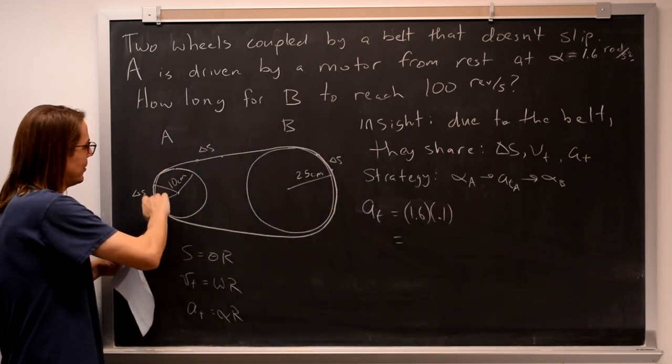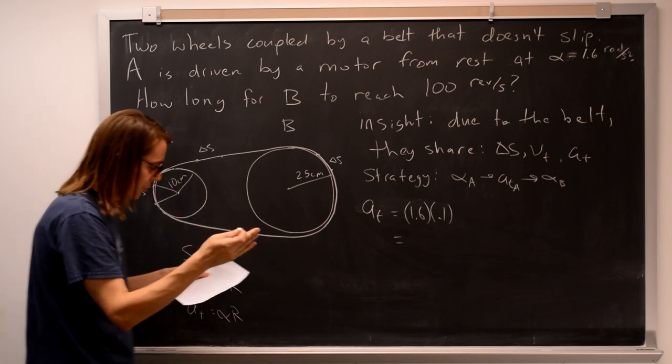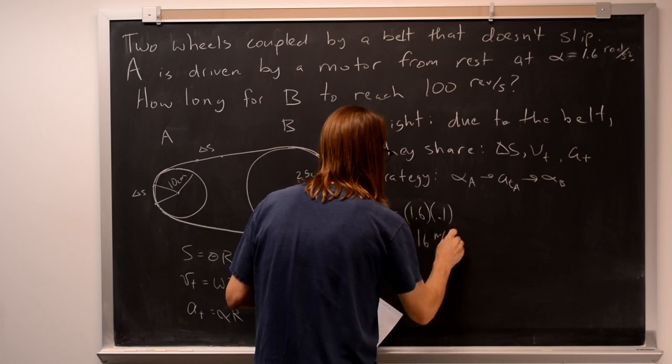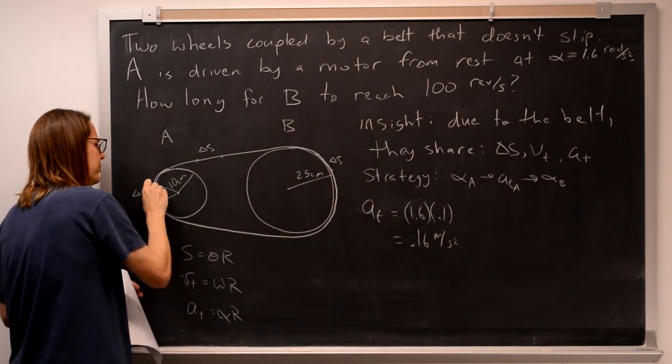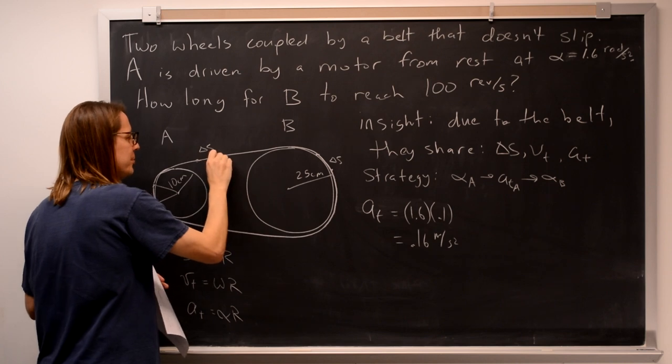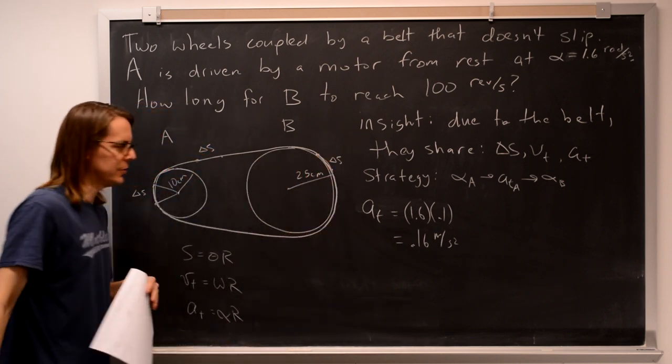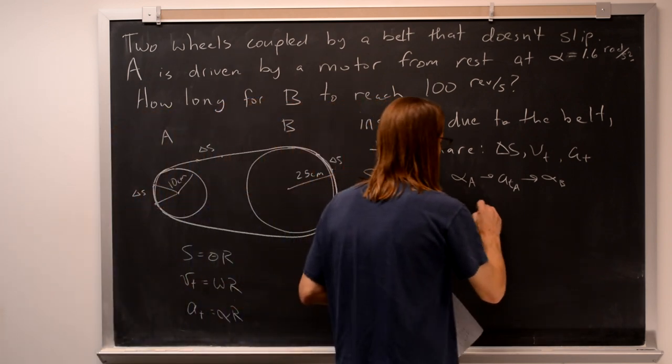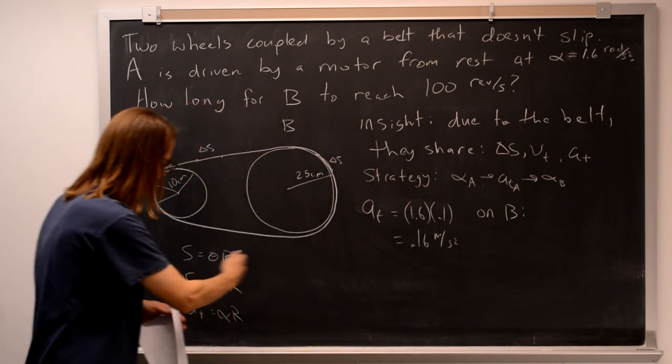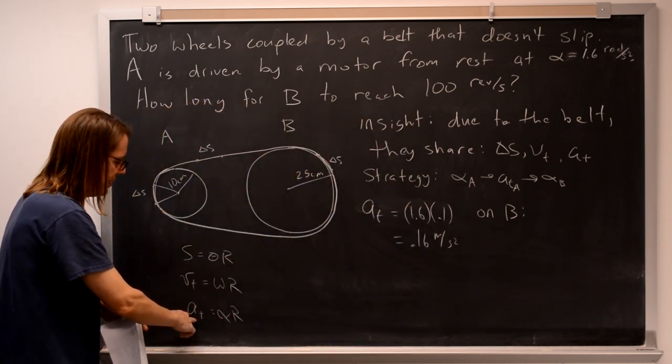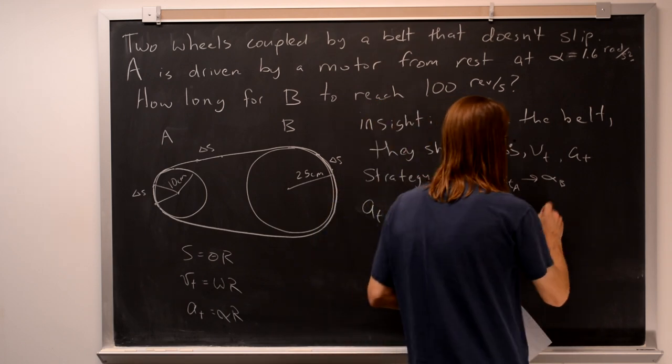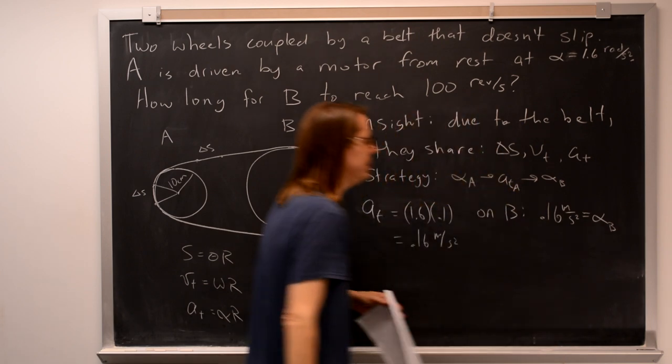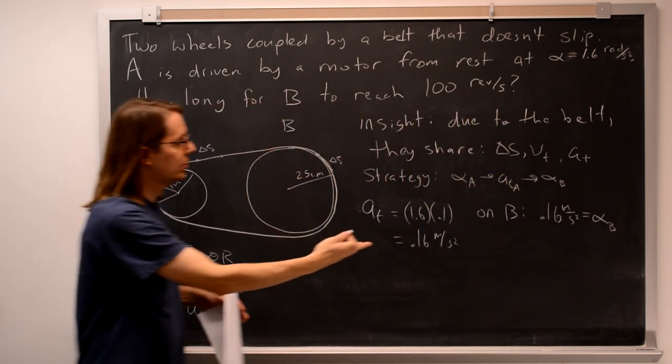So the tangential acceleration in meters per second squared along this belt is 0.16 meters per second squared. So here it's going 0.16 meters per second squared. Here it's going 0.16 meters per second squared. And here it's going 0.16 meters per second squared. So on B, we apply the same equation.